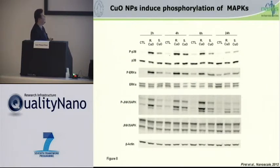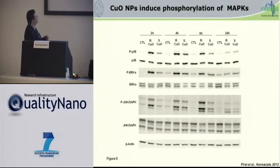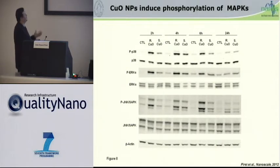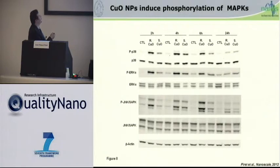We also wanted to determine whether MAP kinases could be activated after exposure to both nanoparticles. Using Western blotting, we detected the phosphorylated form of the three MAP kinases: p38, ERK, and JNK. Already after two hours of incubation, we could detect phosphorylation of all three MAP kinases. Interestingly, we also observed a higher amount of all three MAP kinases after rod-shaped nanoparticle exposure in comparison with spherical nanoparticles.